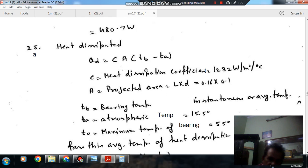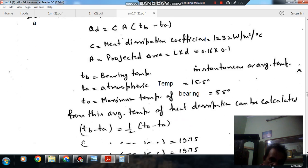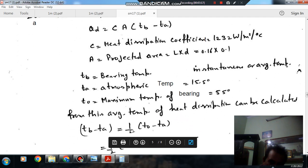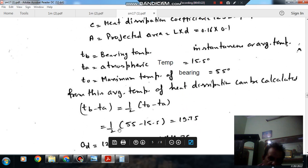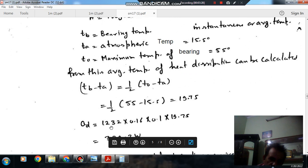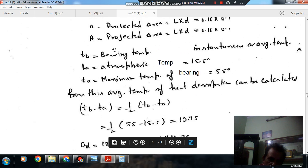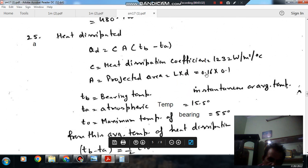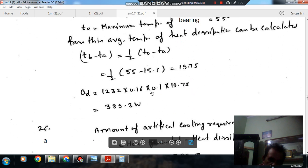That is the average temperature, and this average temperature difference is your TB minus TA. And this average temperature difference is calculated as TB minus TA is equal to half of the maximum temperature difference. Maximum temperature difference is T max minus TA. So TB minus TA is half of the maximum temperature difference. So heat dissipated will be here.